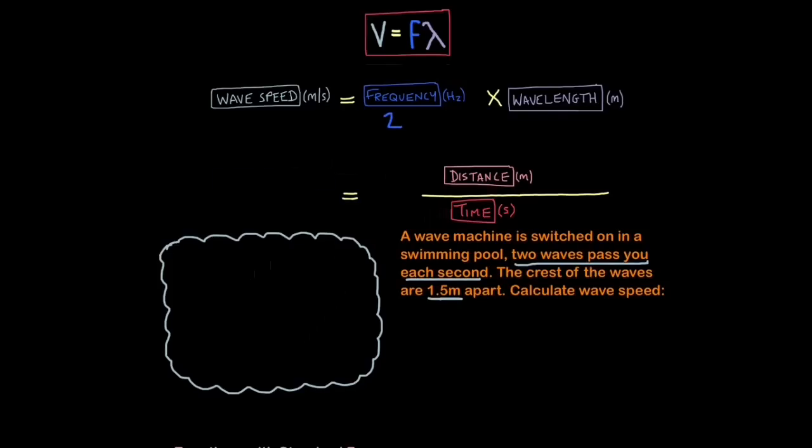So we've got frequency, which is 2 hertz, and we've got wavelength, which is 1.5 meters. So you just do 2 times 1.5 to work out the wave speed. So the wave speed would be 2 times 1.5, which is 3 meters per second.